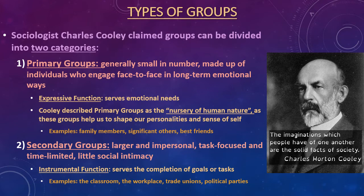Cooley's next broad category are secondary groups, which are larger and more impersonal. They are more focused on accomplishing tasks within a certain time limit, and there's not very much social intimacy. Because of that, Cooley said secondary groups serve an instrumental function — primarily focused on completing goals and tasks, not on serving the emotional needs of group members. For example, the classroom is a secondary group. It's a larger, more impersonal group, focused on learning material as a task within a course schedule.